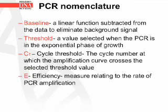Baseline is a linear function subtracted from the data to eliminate background signal. The threshold is a value selected when the PCR is in the exponential phase of growth. CT, the cycle threshold, is the cycle number at which the amplification curve crosses the selected threshold value. E stands for efficiency, and this is a measure relating to the rate of PCR amplification.